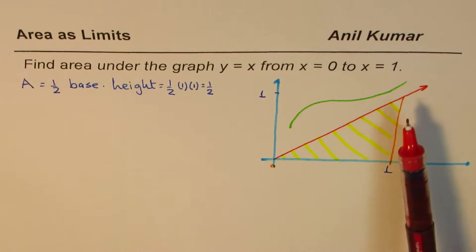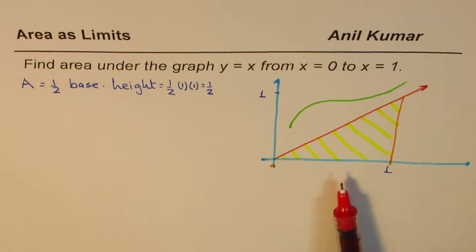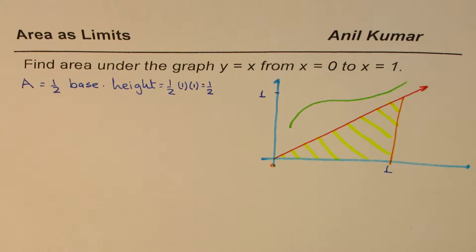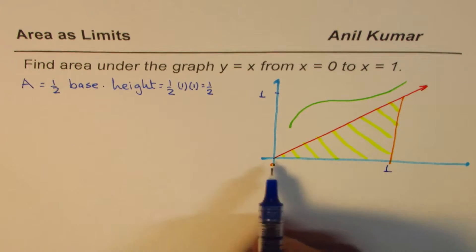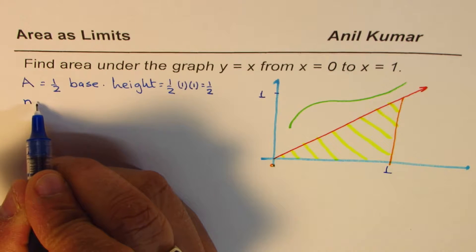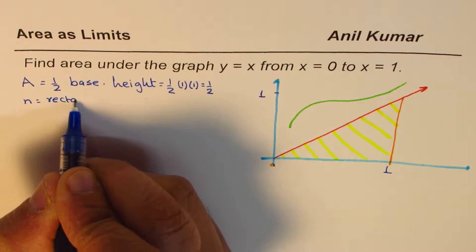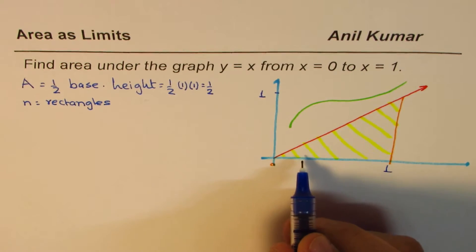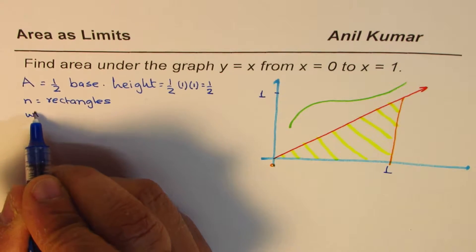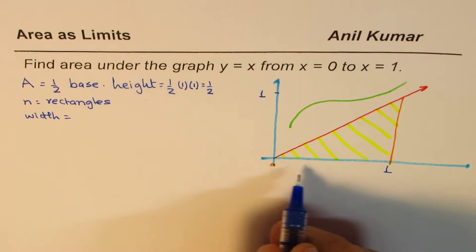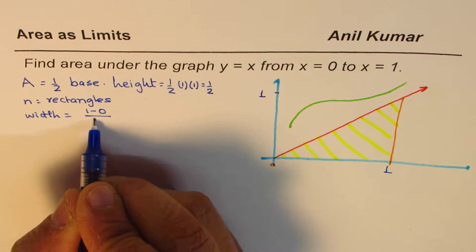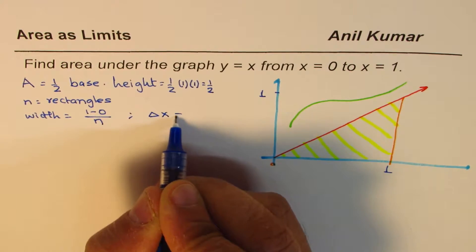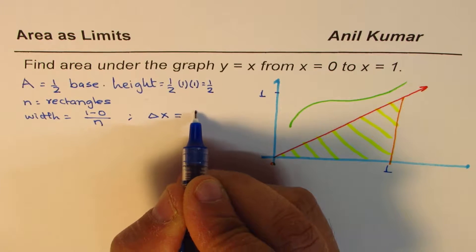You know that the area of y equals x from 0 to 1 is half, but we'll find this area using approximation. This whole length from 0 to 1 will be divided into n rectangles. The width of each rectangle will be 1 minus 0 divided by n. Let's call this delta x, so delta x equals 1 over n.